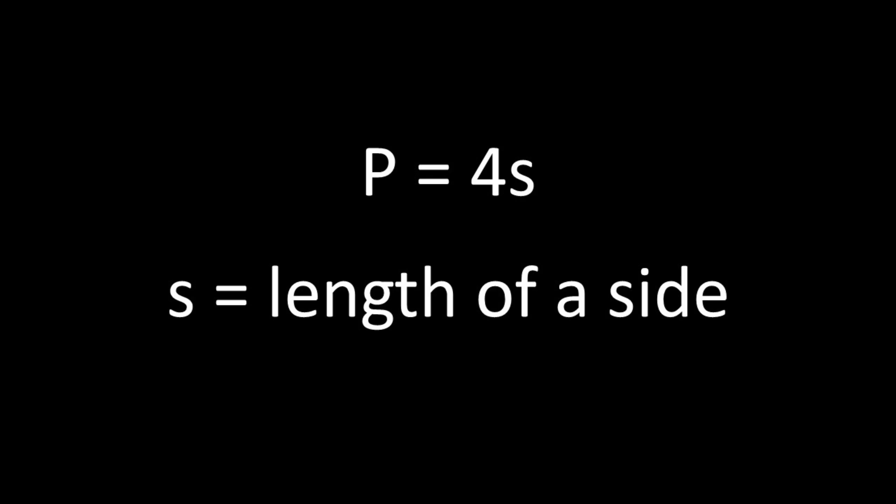The formula for calculating the perimeter of a square is perimeter equals 4s, or 4 times the length of a side. Let's take a look at our examples.